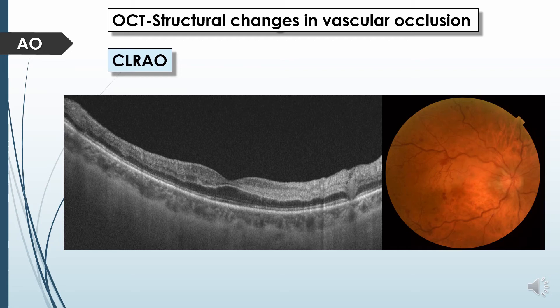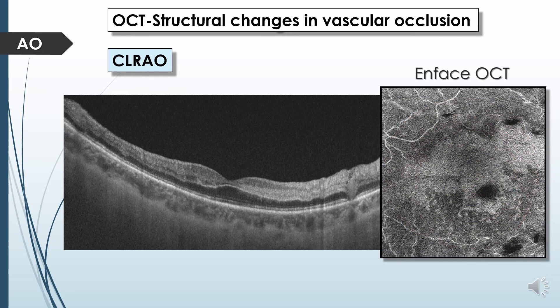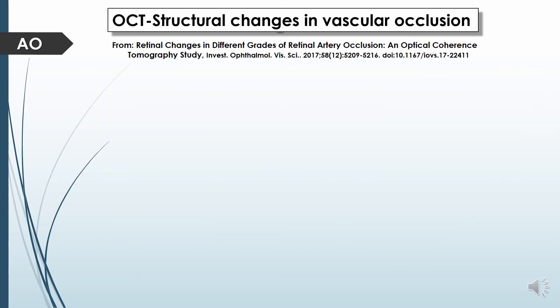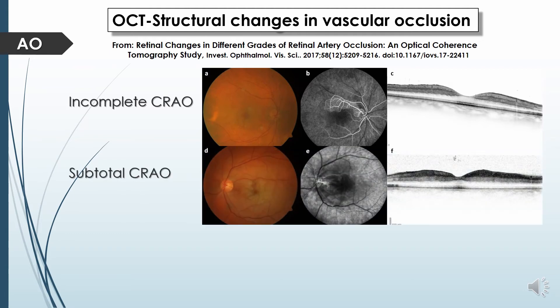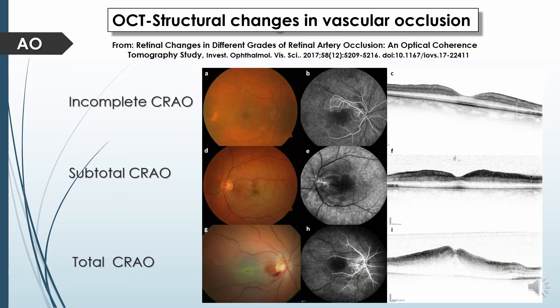B-scan and en-face OCT show hyperreflectivity of the inner retinal layer in the affected macular region. Grading for OCT features in central retinal artery occlusion classifies it into: incomplete CRAO — hyperreflectivity of the inner retinal layer without retinal thickening where different layers can be easily differentiated; subtotal CRAO — mild thickening with hyperreflectivity where layers can be differentiated with difficulty; and total CRAO — significant retinal thickening and hyperreflectivity where layers cannot be differentiated from each other.